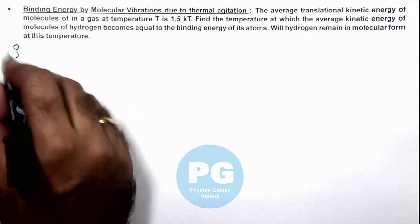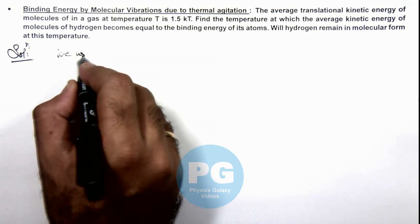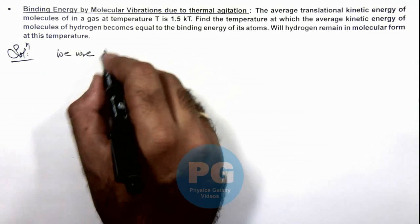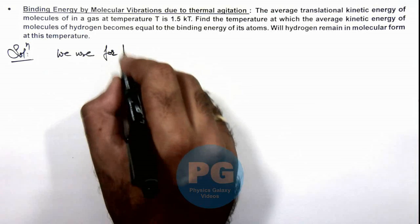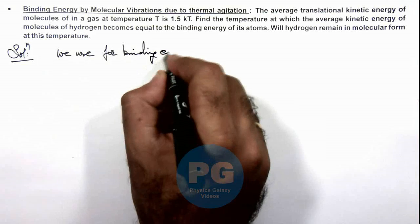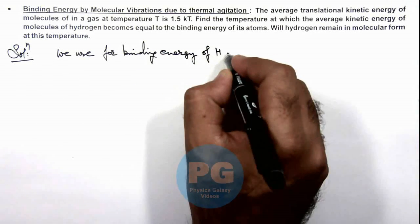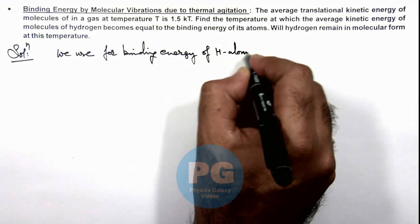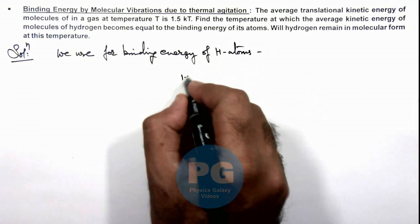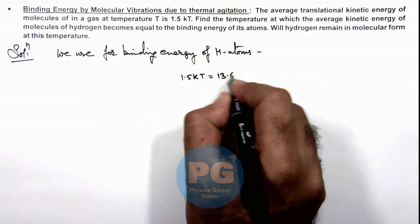Now in this solution, here we can write, we use for binding energy of hydrogen atoms, this 1.5 kT should be equal to 13.6 electron volt.